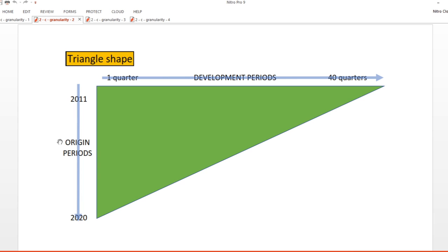Also be careful that you don't try to combine segments with different origin period types, or you'll end up with something nonsensical. We could also choose to group our development periods into months or years rather than quarters. So how do we know what's appropriate to use?